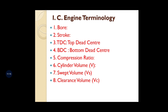To summarize the IC engine terms: bore is the inside diameter of the cylinder; stroke is the linear distance traveled by the piston between the extreme positions — TDC and BDC; top dead center is the extreme portion at the top, bottom dead center at the bottom; for horizontal cylinders we use inner dead center and outer dead center. Compression ratio is the ratio of maximum to minimum cylinder volume. Cylinder volume equals swept volume plus clearance volume. Swept volume is the volume generated by piston movement between dead centers. Clearance volume is the space in the cylinder when the piston is at TDC.